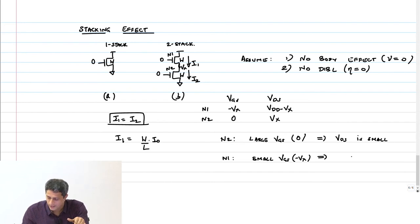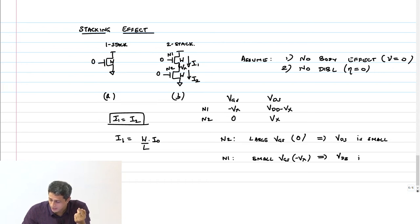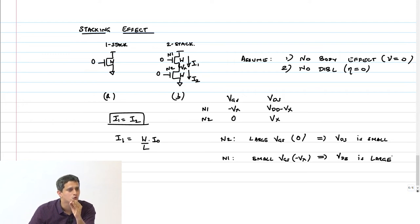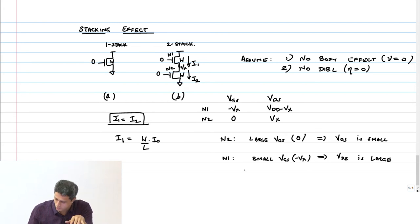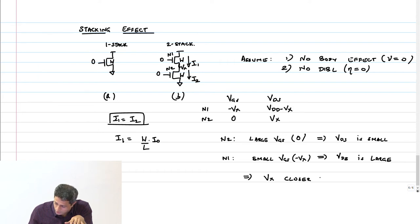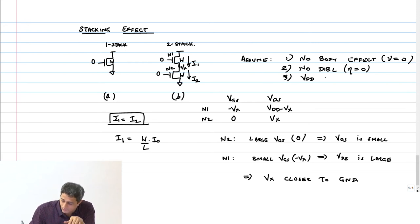So if V_X is close to ground, V_DS of N2 is small and V_DS of N1 is large — these two will easily match. Conclusion: V_X is closer to ground. Third assumption: VDD is large.